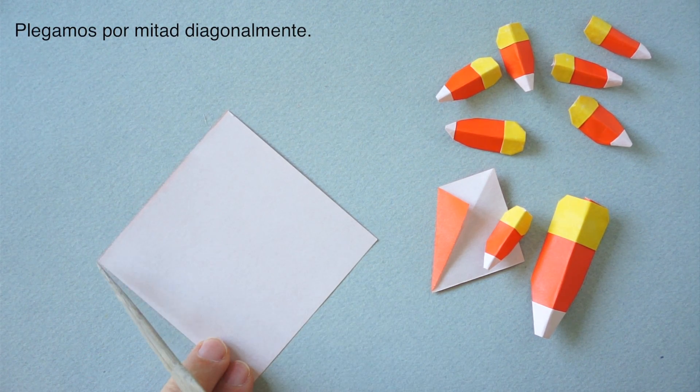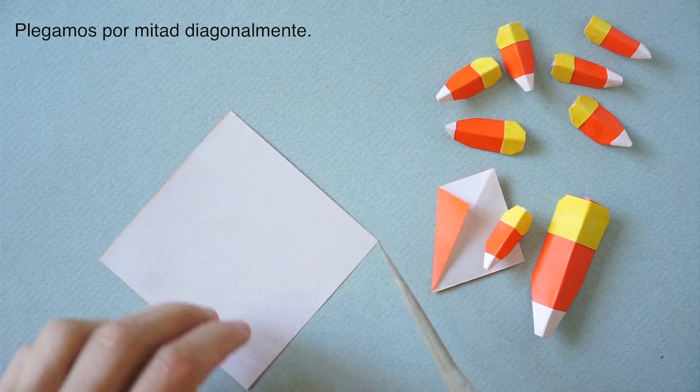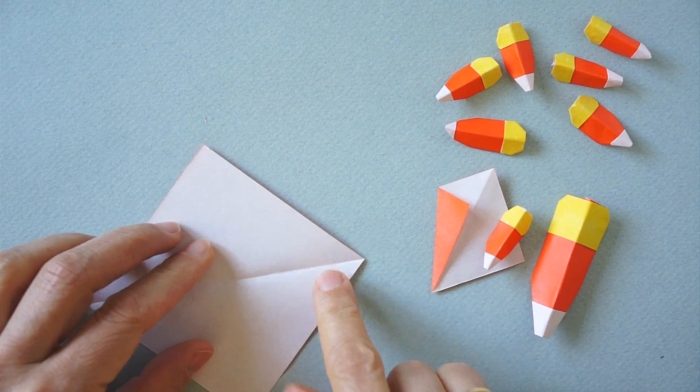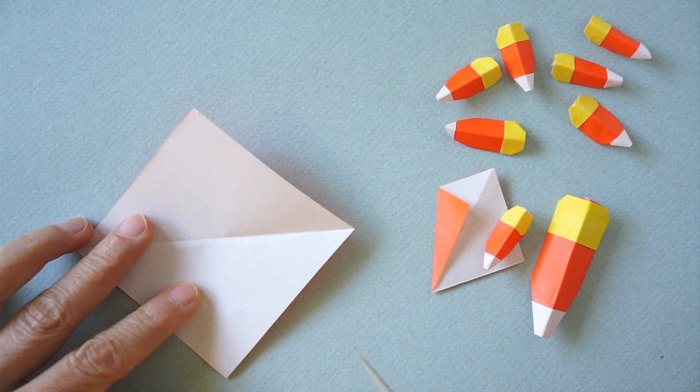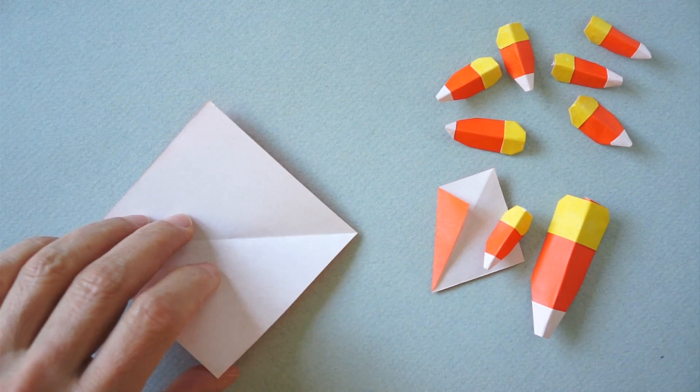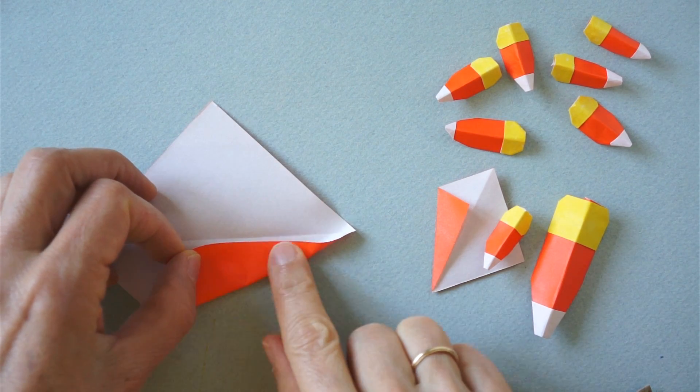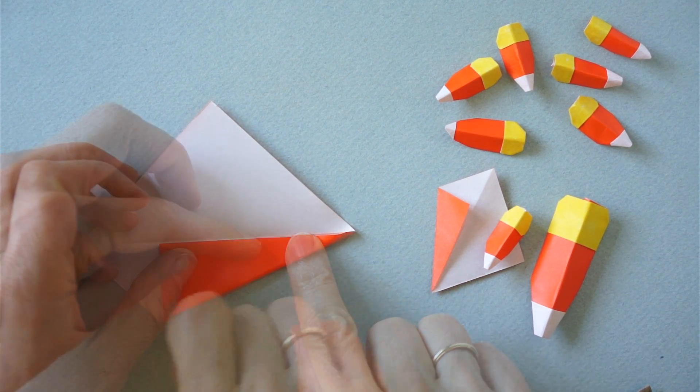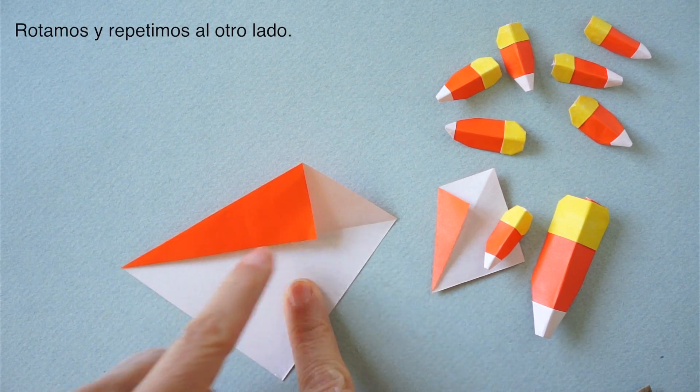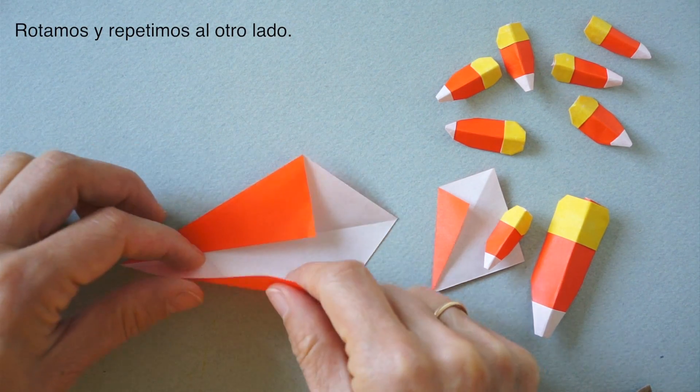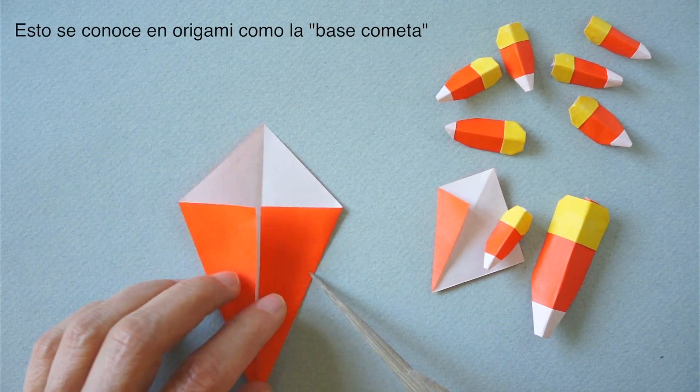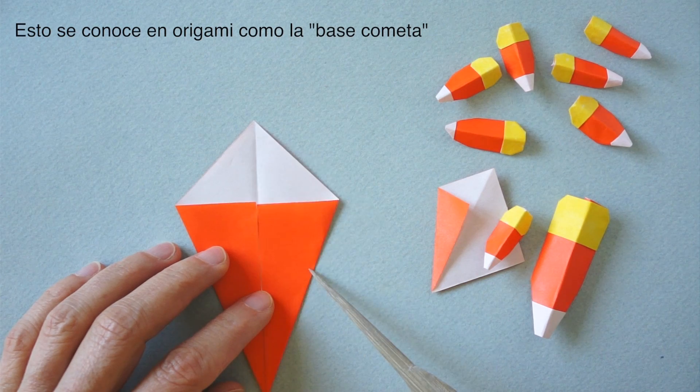Oriented like a diamond and we are going to fold it in half. Now we'll fold this edge to align with the center. Rotate and repeat. This edge aligns with the center. This is known as the kite base.